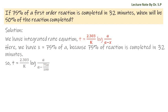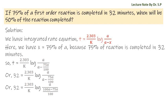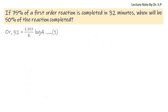So, t is equal to 2.303 by k times log a by (a minus 75a by 100). Simplifying: 32 is equal to 2.303 by k times log a by (100a minus 75a by 100), which gives 32 is equal to 2.303 by k times log (100A by 25A). Therefore, 32 is equal to 2.303 by k times log 4. Let us consider this as equation 1.